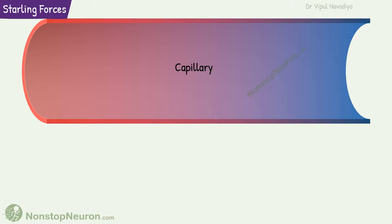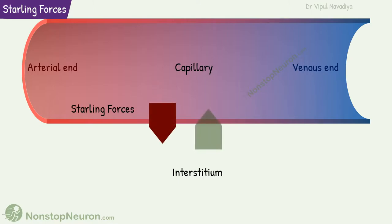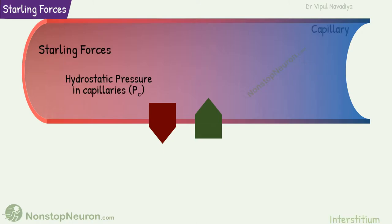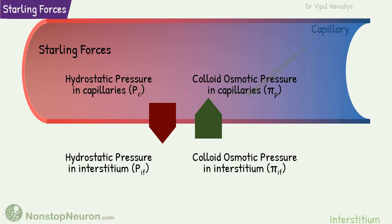This is a capillary. This is its arterial end, this is the venous end, and the remaining area is interstitium. The Starling forces are the driving forces that move fluid across the capillary. They include hydrostatic pressure and colloid osmotic pressure in the capillary as well as in the interstitium. The sum of these forces determines whether there will be net filtration or absorption.